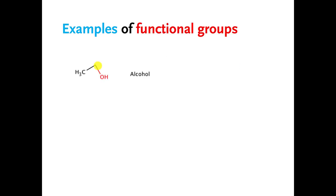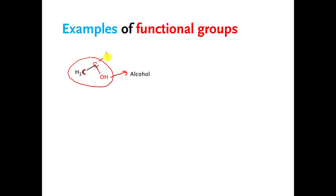More functional groups you need to know. If you have a carbon single bonded to an oxygen, and the oxygen is bonded to a hydrogen, that O and H are called an alcohol functional group. This particular molecule with an alcohol functional group has two carbons, so it's related to ethane — but this isn't ethane; it's ethane with an alcohol. So it's called ethanol. That's the booze that gets you drunk.